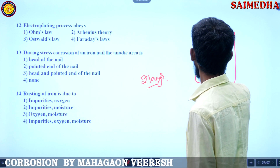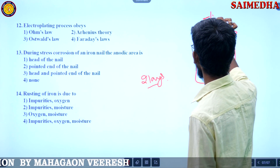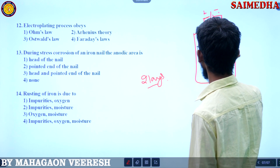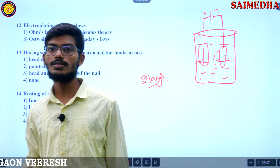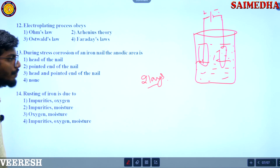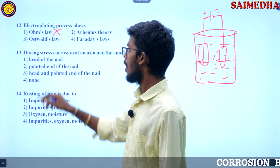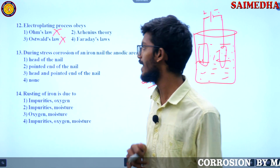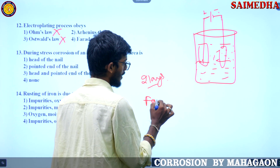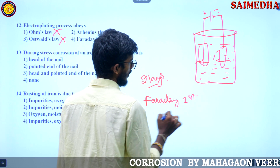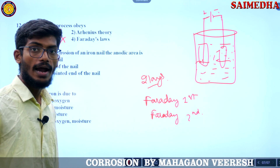Ohm's law is not related to this concept. Arrhenius theory may confuse you. The two laws are Faraday's first law and Faraday's second law. These two laws are taken from the electroplating process. Faraday's first law states that the weight of metal deposited at the cathode is directly proportional to the quantity of electricity passed — W is directly proportional to Q.